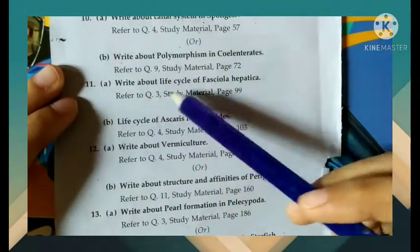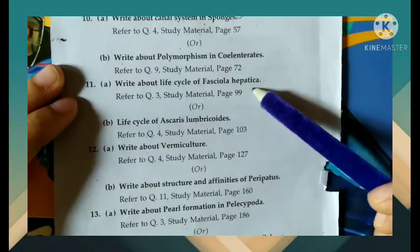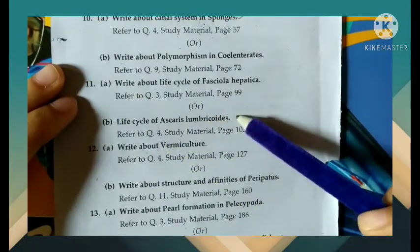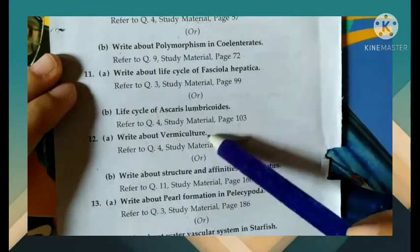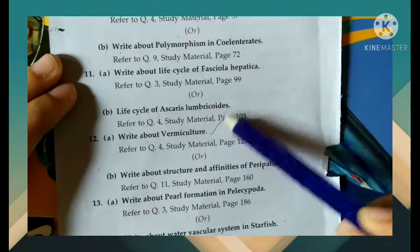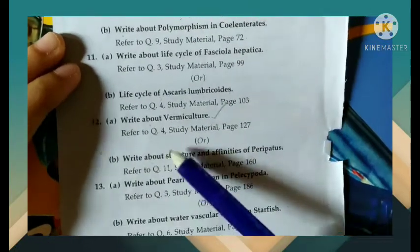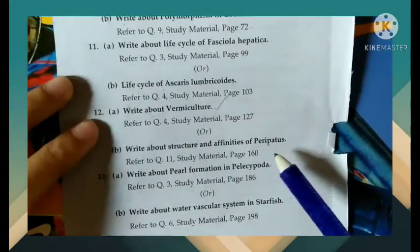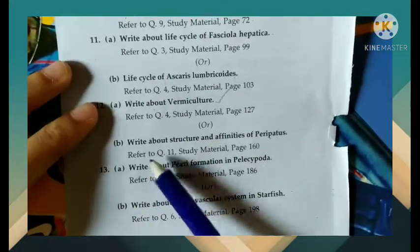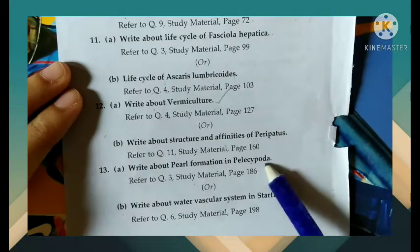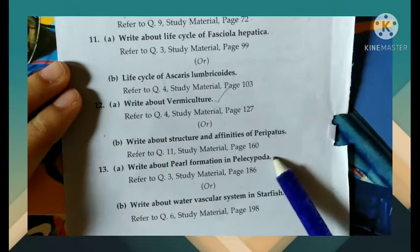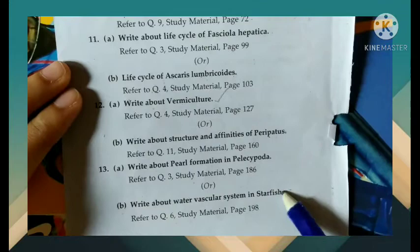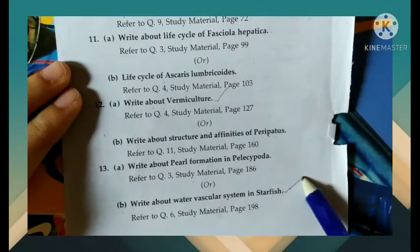Write about life cycle of Fasciola Hepatica, or else Ascaris Lumbricoides. Write about vermiculture — this is also very important. Or else write about structure and affinities of Peripatus. Write about shell formation in Pelecypoda, or write about water vascular system in starfish — this is also very important.